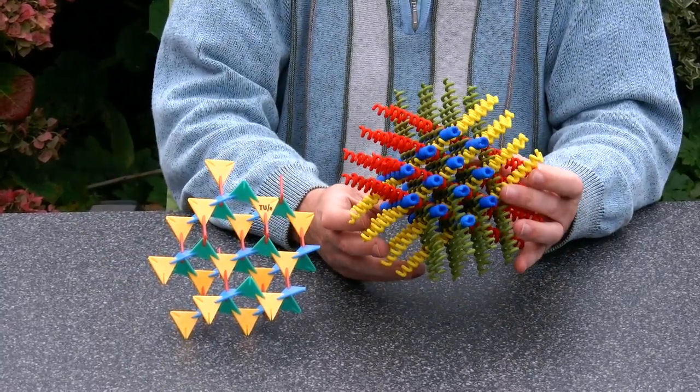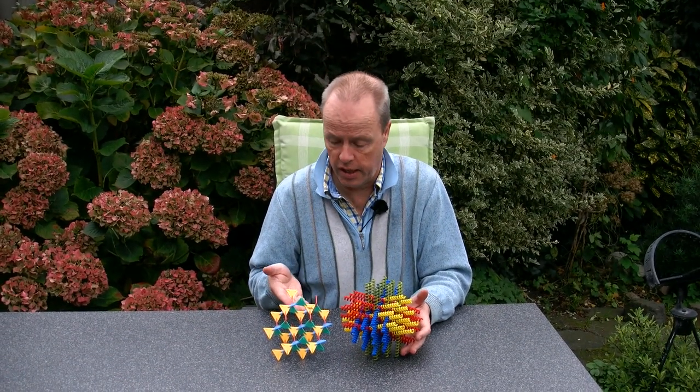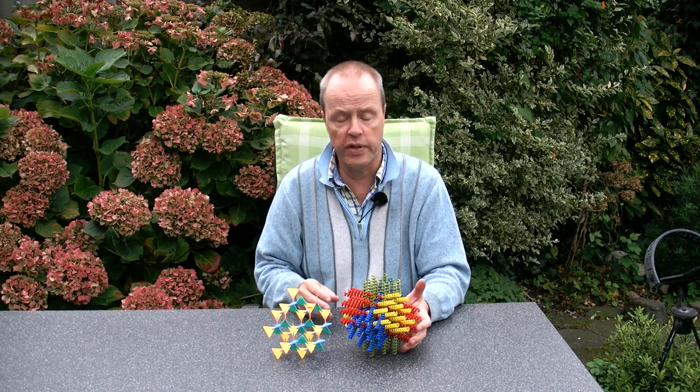So my question to you about this is: this crystal structure here, let's call it the bamboozle crystal structure, is a structure with spiral symmetry. Do we know any other crystal structures that have a spiral symmetry?